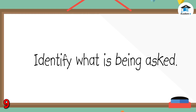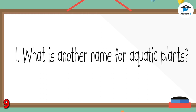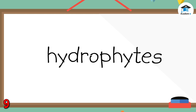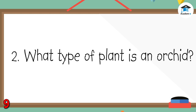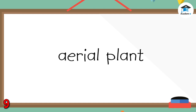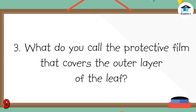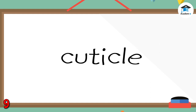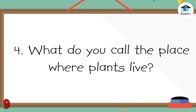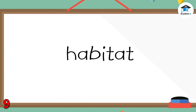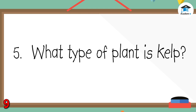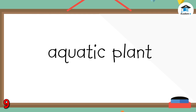Let us have a short exercise. One: What is another name for aquatic plants? The answer is hydrophytes. Two: What type of plant is an orchid? The answer is aerial plant. Three: What do you call the protective film that covers the outer layer of the leaf? The answer is cuticle. Four: What do you call the place where plants live? The answer is habitat. Five: What type of plant is kelp? The answer is aquatic plant. You are awesome — you got them right!